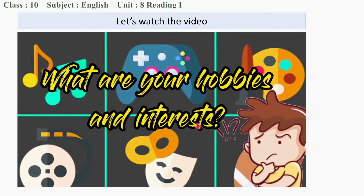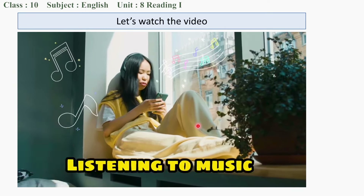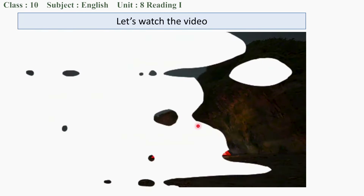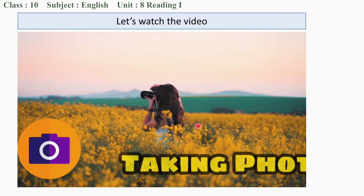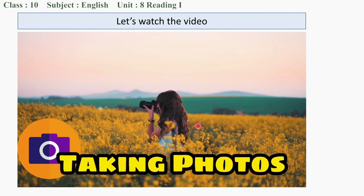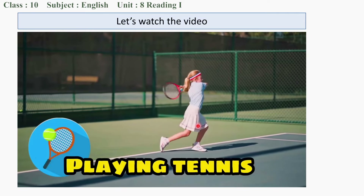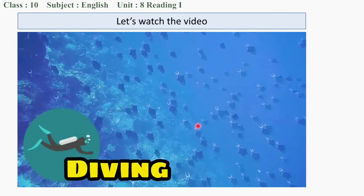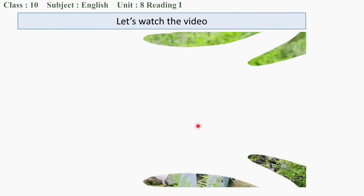What are your hobbies and interests? Listening to music — I love to sing while listening to music. Camping — I like camping out in summer holidays. Painting — I love painting with watercolors. Taking photos — I like taking photos of places and nature. Jogging — I like jogging in the central park. Playing tennis — I enjoy playing tennis with my friends. Diving — I like diving for sunken treasure. Dancing — I love dancing to hip-hop music.